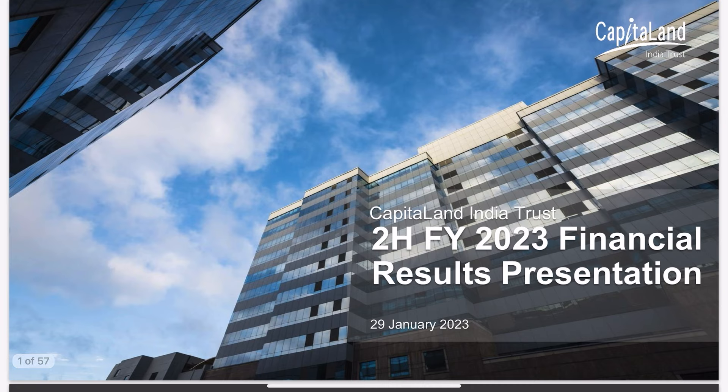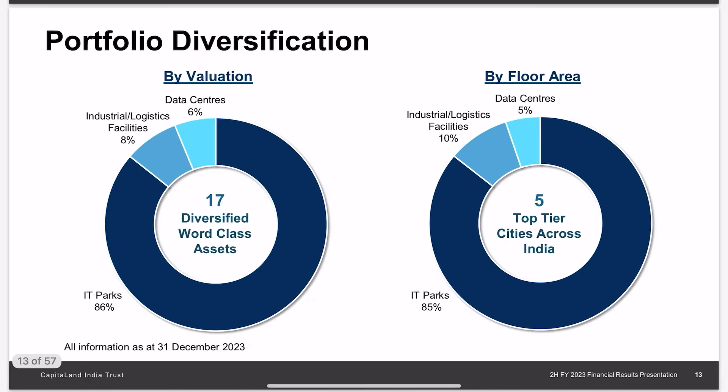Let's get straight into analyzing their recent results. The first is CapitaLand India Trust. It is an interesting REIT that is fully focused on the Indian market. They have the majority of their assets in office at 86 percent, while logistics and industrial properties are at 8 percent and data centers at 6 percent.